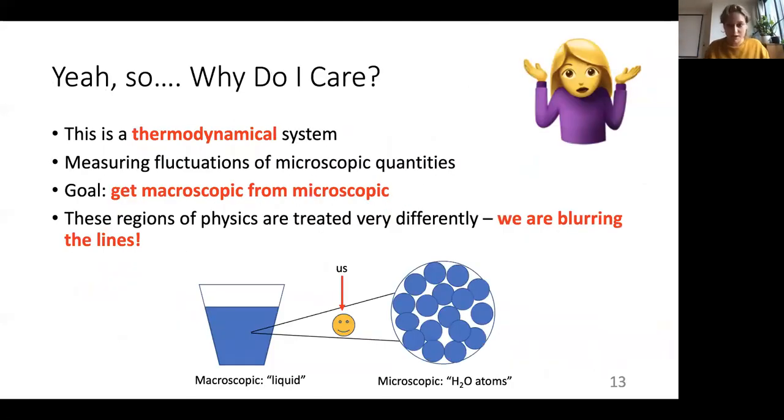So why should you care about this experiment in the first place? Well, it blurs the boundaries between the microscopic and macroscopic realms. We're using thermodynamical information about the microscopic fluctuations to talk about macroscopic quantities like the Boltzmann constant. And usually these two areas of physics are treated rather separately, but here we kind of were able to use the fundamental physics that governs both of these areas and figure out the connection between them. And we're using fundamental physics like harmonic oscillators and energy conservation to unify these two areas of physics, which I think is pretty neat.